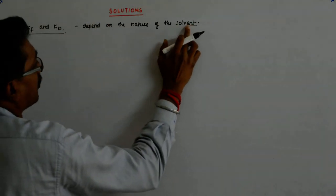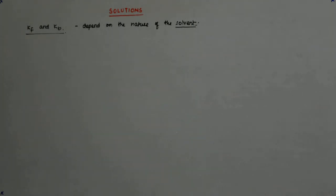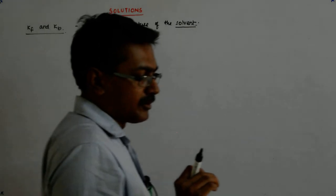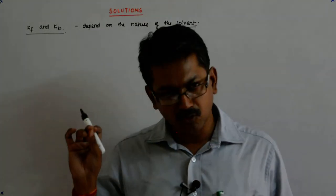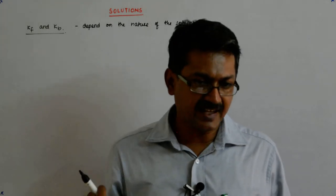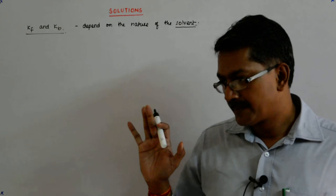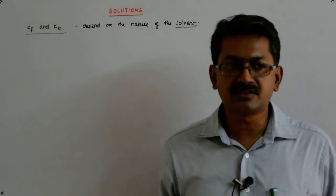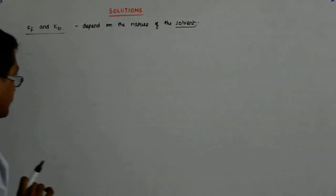So it depends on the nature of the solvent. Now, in this solvent, in a particular amount of solvent, you put one mole of a substance, AX or a substance Y, it won't matter. It will depress the freezing point by the same amount.